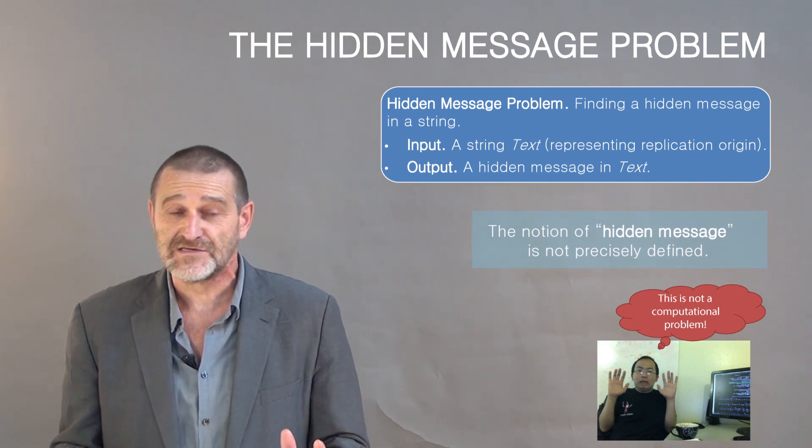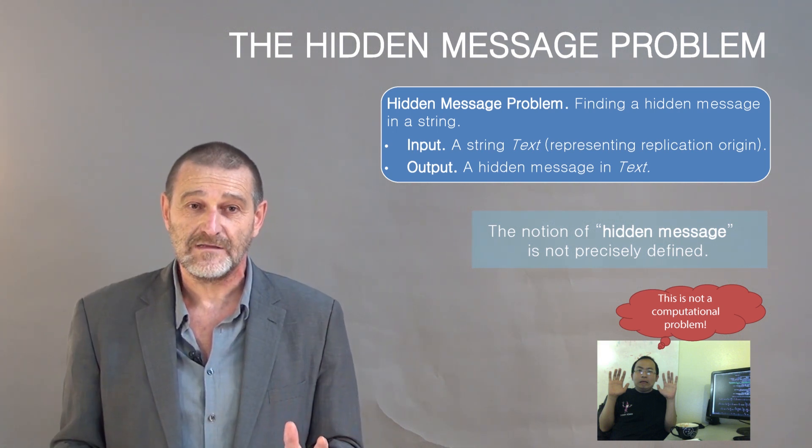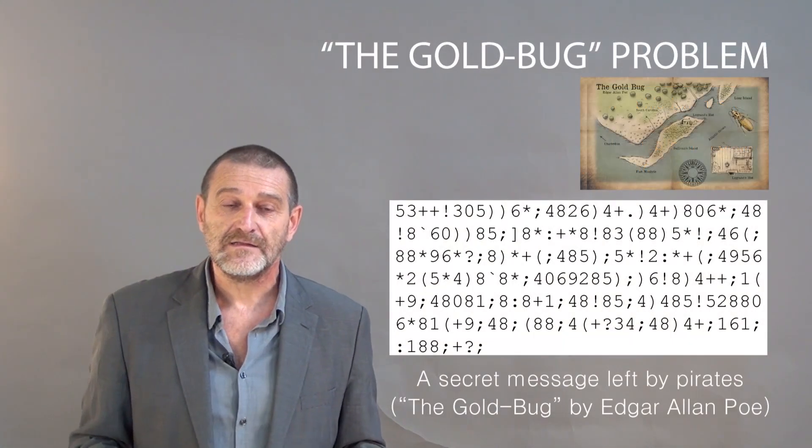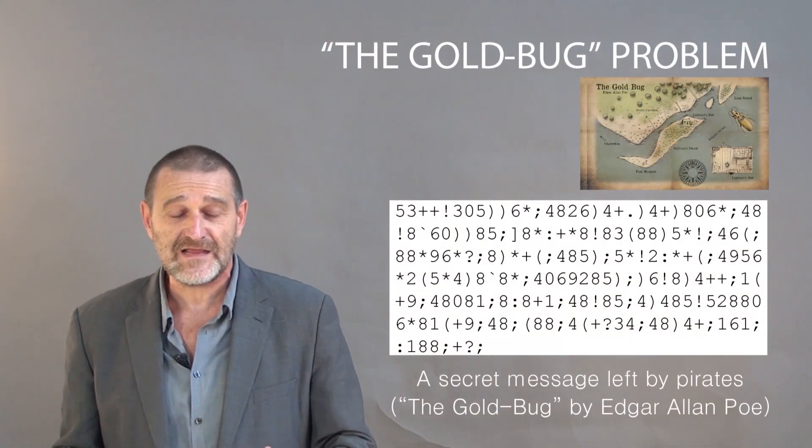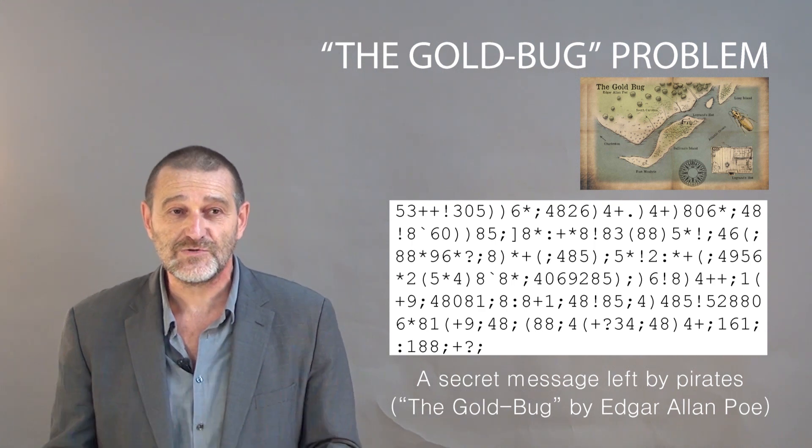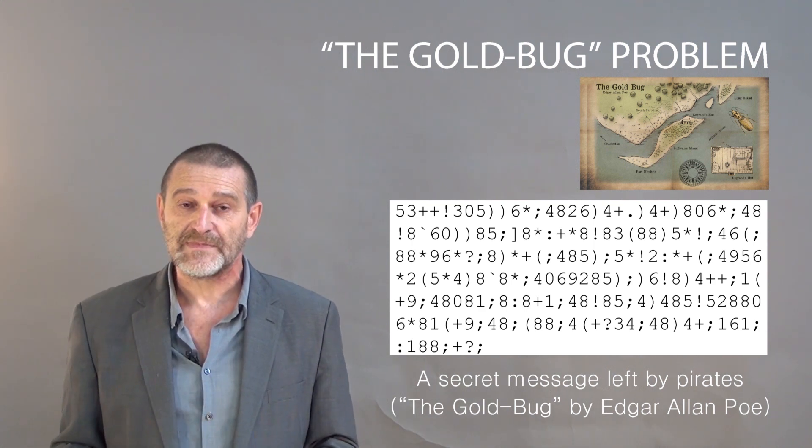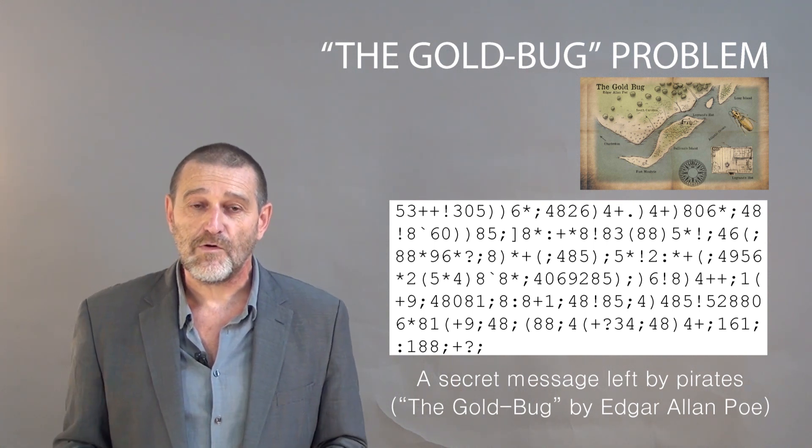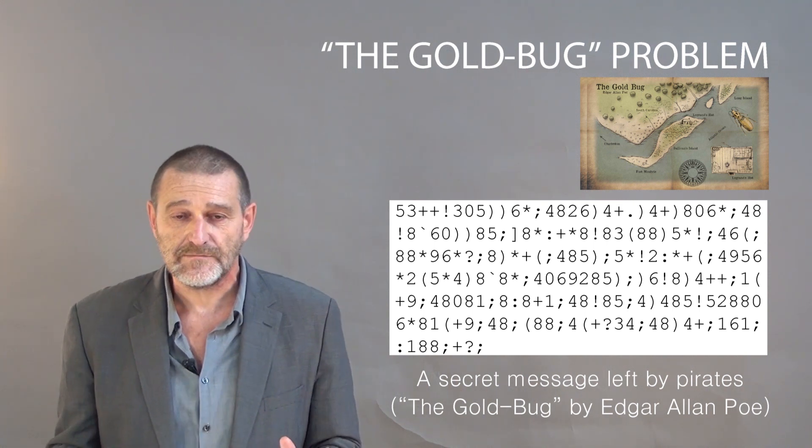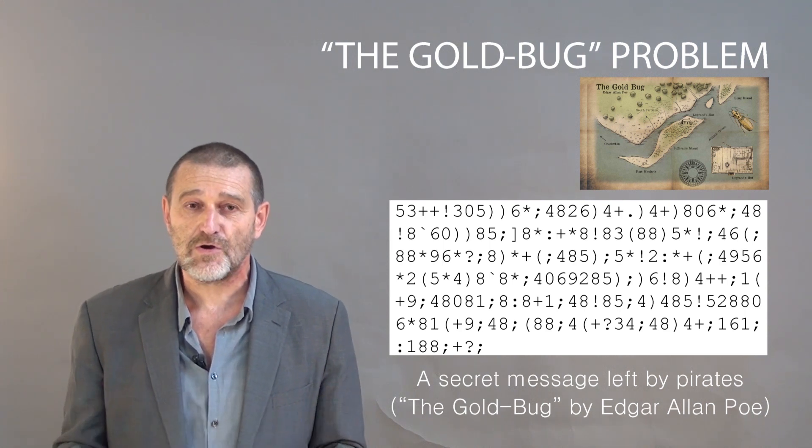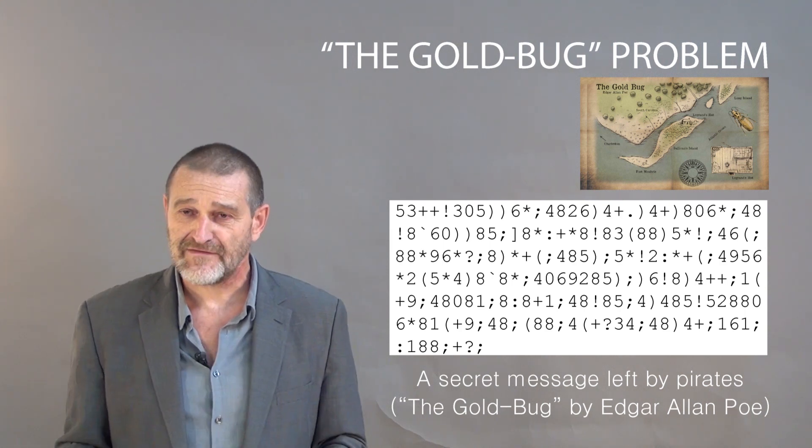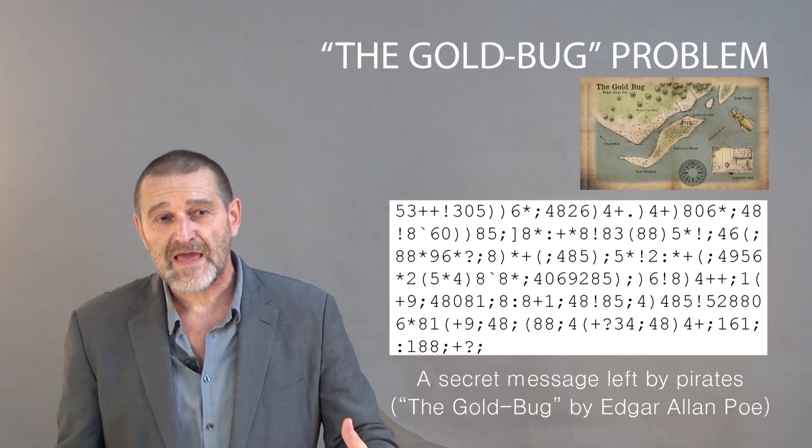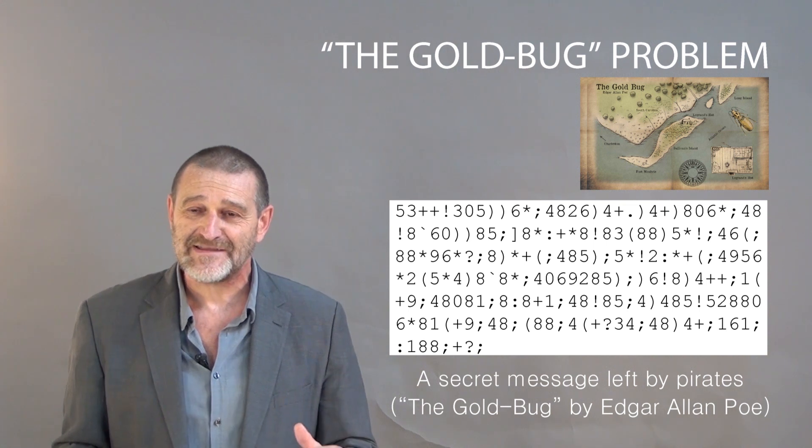So for a computer scientist, there is no starting point to address this problem. But let's go two centuries back and let's see how somebody in a somewhat similar situation tried to solve a similar problem. We go to the Gold-Bug short story by Edgar Allan Poe. And in this story, the hero, whose name was Legrand, tried to decode the message left by pirates. And his hope was that when he decodes the message, he will be able to find the pirate treasure. So he was quite motivated.